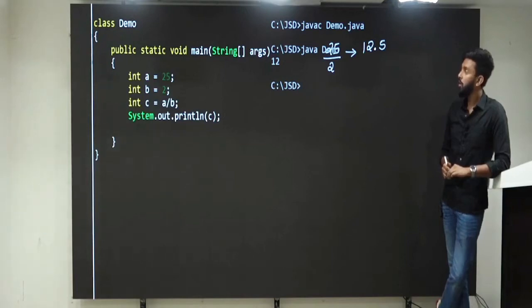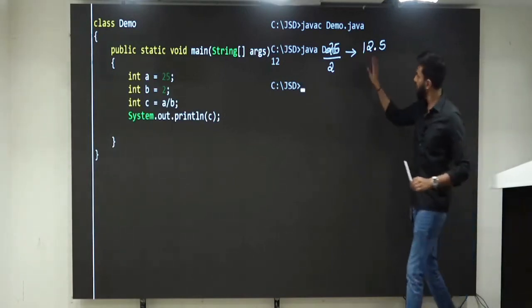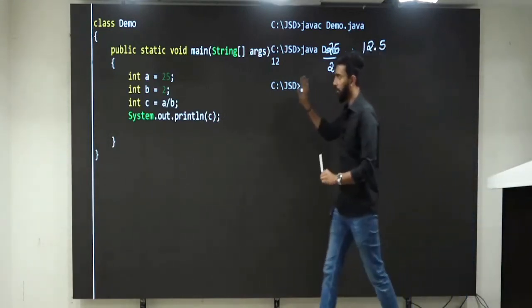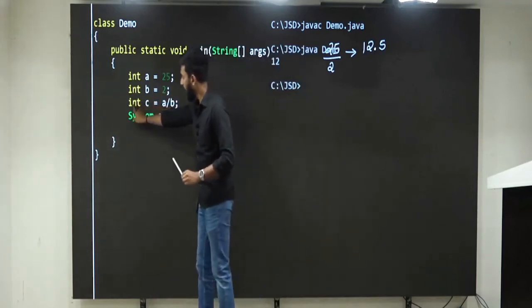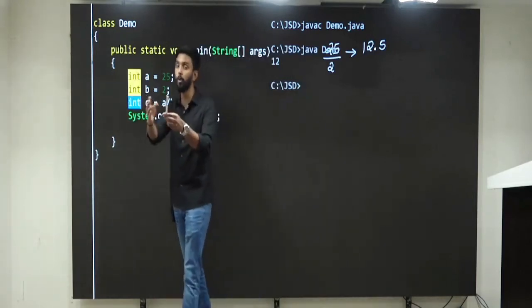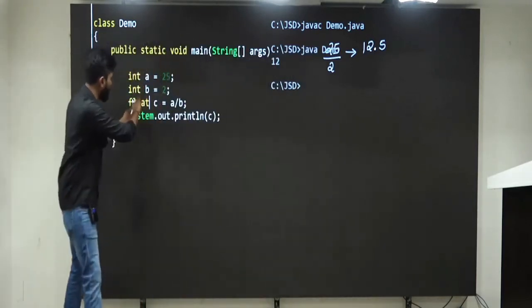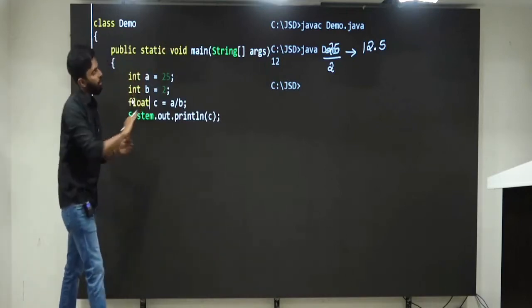So now, if that is the case, if I want 0.5, see what I will do. Instead of int, I will make it as float, because float means real numbers. Real numbers can store decimal part. Okay.